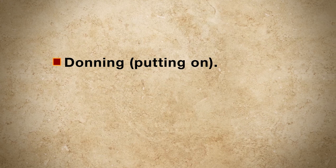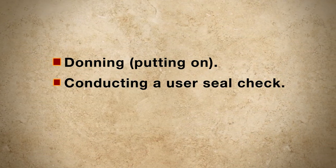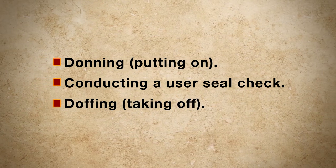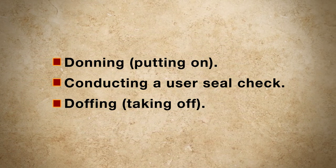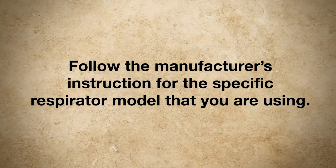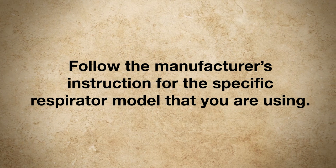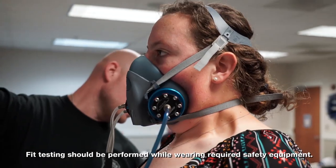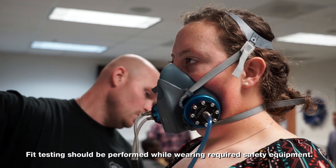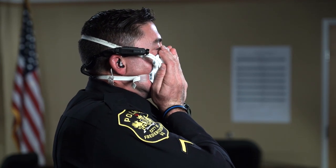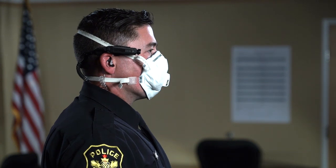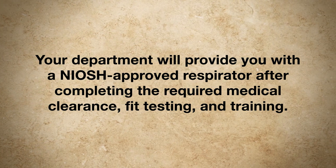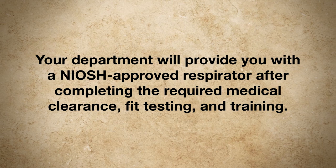The following are some general instructions for properly donning, conducting a user seal check, and doffing the two most common types of respirators used to protect against illicit drugs. You should always follow the manufacturer's instructions for the specific respirator model that you are using. A fit test verifies that the respirator fits you correctly. It must be performed before you wear a respirator for the first time, and at least yearly after that. You should perform a user seal check each time you don a respirator. Your department will provide you with a NIOSH-approved respirator after completing the required medical clearance, fit testing, and training.